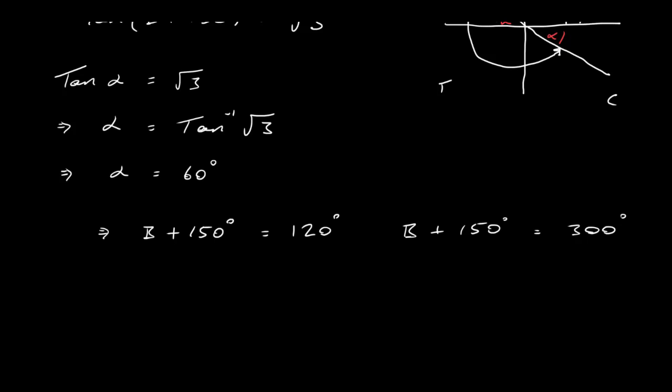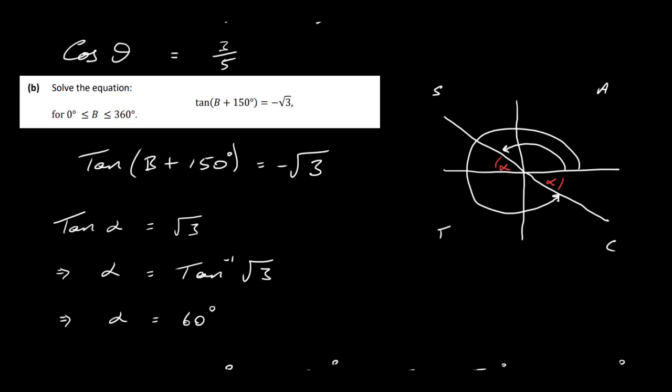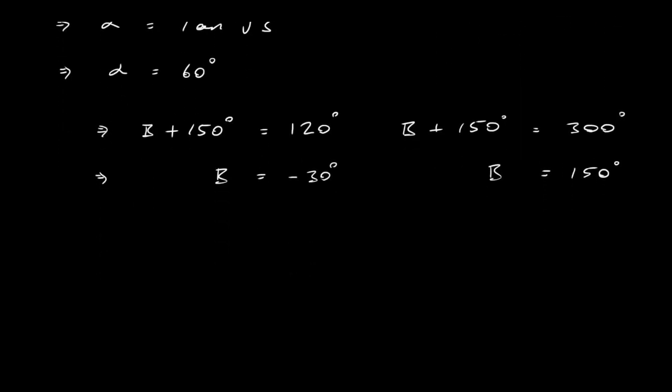Now we want to solve for B, so we've got to say here that B would be equal to minus 30 degrees, so B over here would be equal to 150 degrees. Now in the question here, it just says that B has to be between 0 and 360 degrees, so you've just got to change this one here. So if we have B as minus 30 degrees, that's just the same as B being 330 degrees. Negative 30 degrees is the same as positive 330 degrees. So these are our two answers here, B is 330, and B is 150.